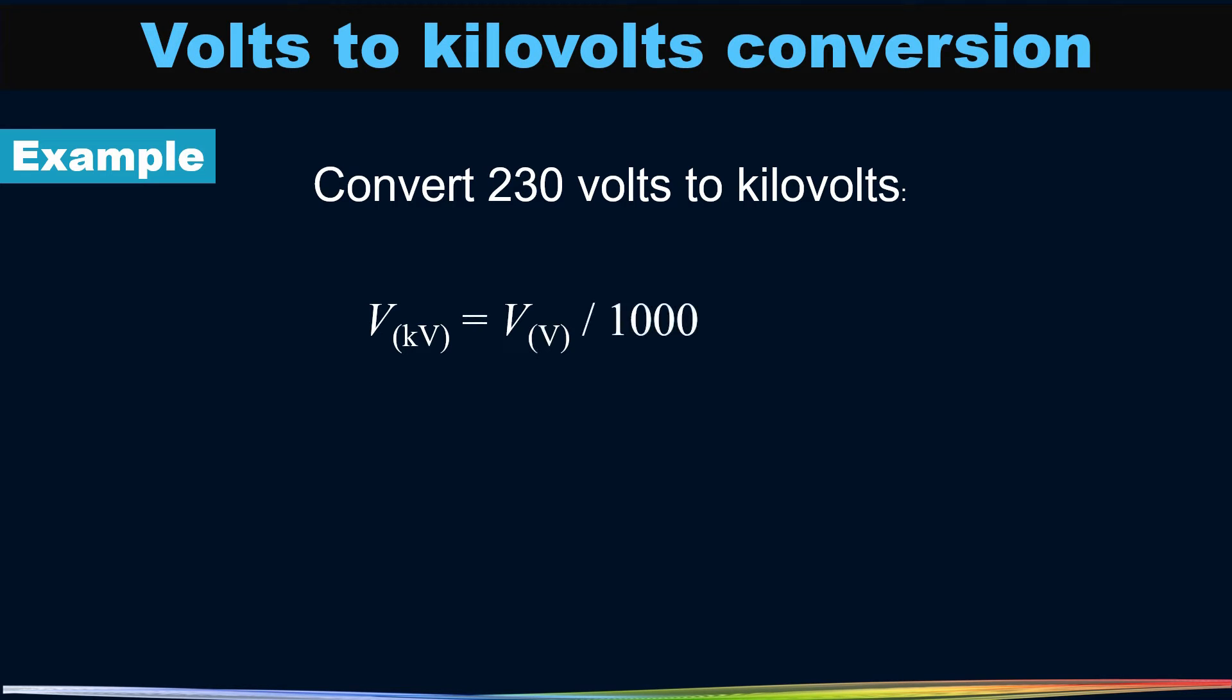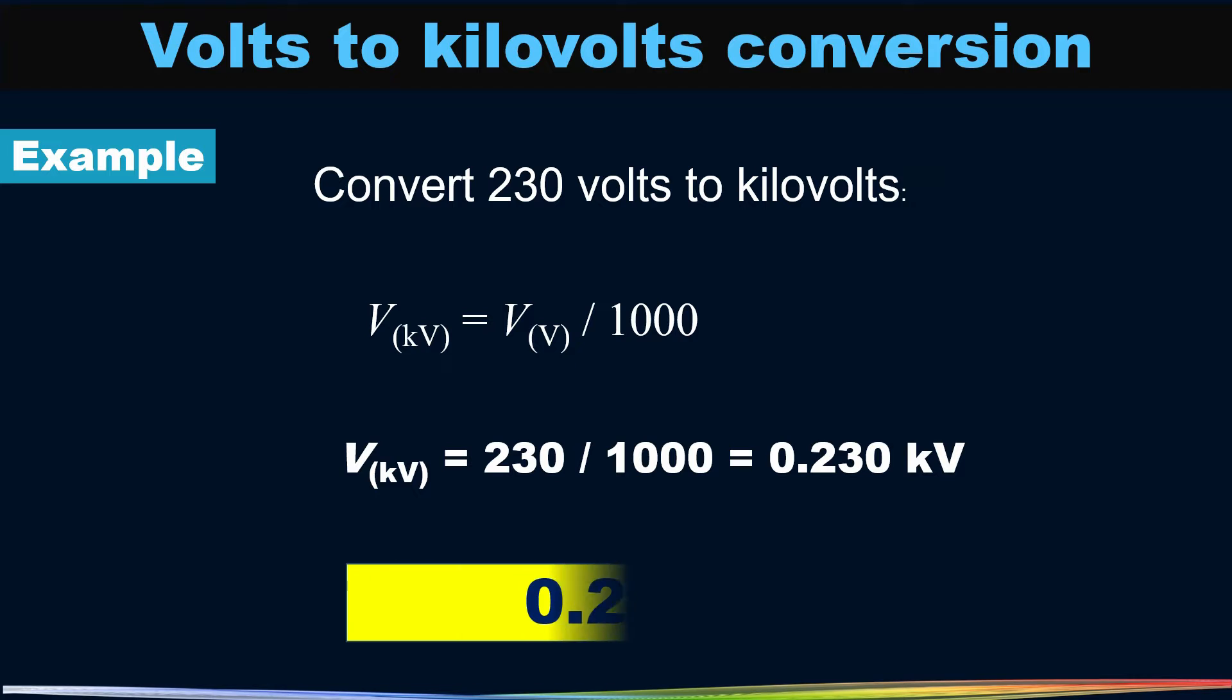Put the values in the formula. Kilovolt is equal to 230 divided by 1000. So the answer is 0.23 kilovolt.